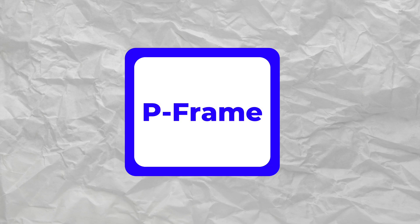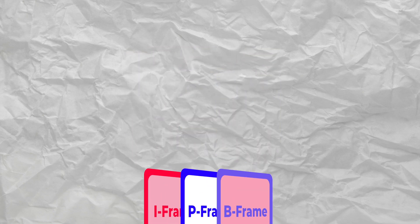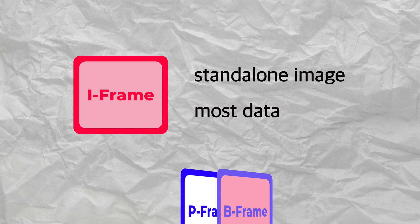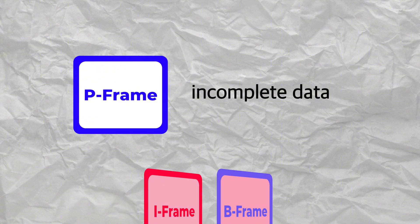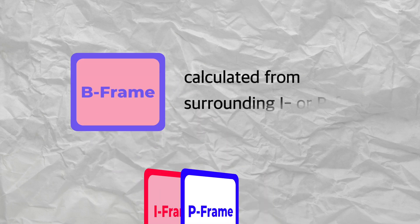While understanding the specific compression algorithms isn't necessary, it's important to be familiar with certain H.264-specific concepts: I-frames, P-frames, and B-frames. An I-frame, or intra-frame, is a standalone image frame that can be displayed independently and contains the most data. A P-frame, or predicted frame, is computed from the previous I-frame or P-frame, so its data is incomplete and smaller in size compared to an I-frame. Most frames in a video are P-frames. A B-frame, or bi-predictive frame, is calculated based on both the preceding and succeeding I-frames or P-frames, making it the most data-efficient and smallest frame.